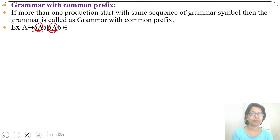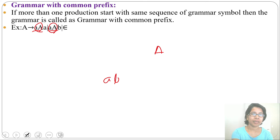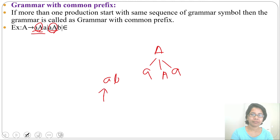For top-down parsing, the grammar should be free from left recursion, ambiguity, and common prefixes. The disadvantage of common prefixes: suppose you want to generate 'ab' from A. We choose the first option, A → aaa. The pointer will see the first 'a' matches, so it chooses the first option.